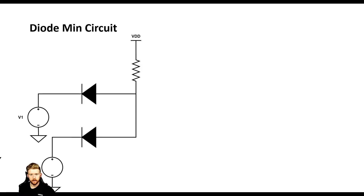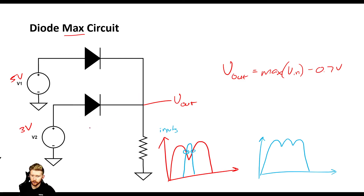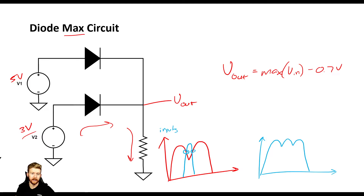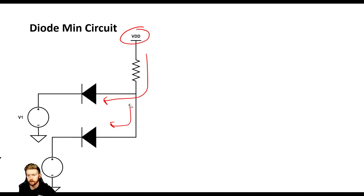The next circuit is the diode minimum circuit, which tries to find the minimum of all input signals. You'll notice this one is a little different. Before we had a pull-down resistor because we knew current would flow down to ground toward the lowest potential. For the minimum circuit, we assume inputs are lower, so we need current to flow from VDD through a resistor and then through one of the two diodes — which is why we have a pull-up resistor instead.